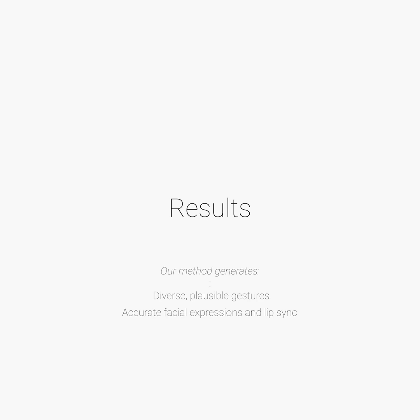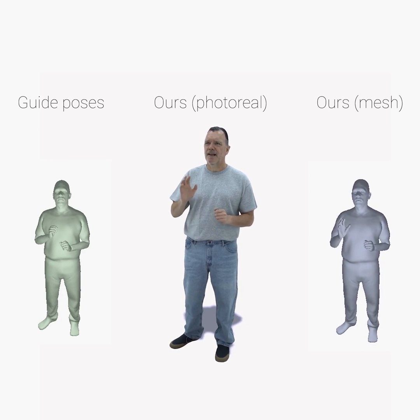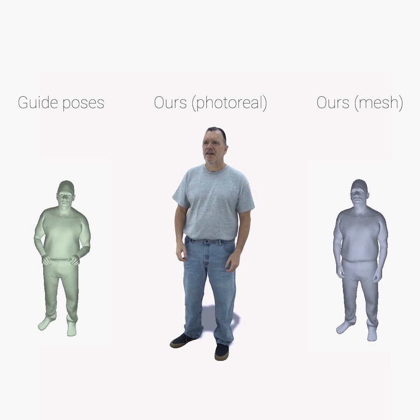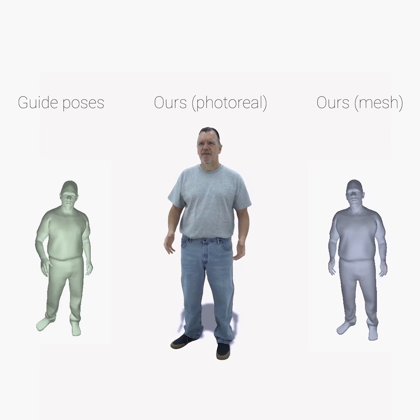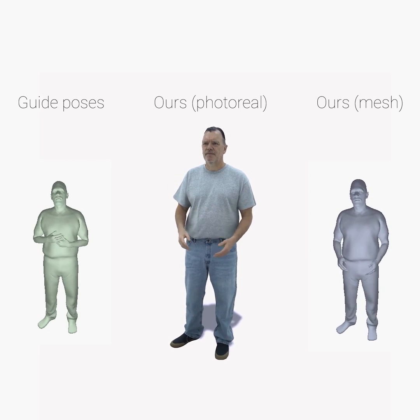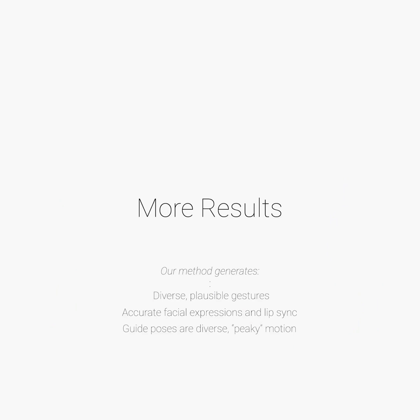Our method generates diverse and plausible gestures. For the face, our network produces accurate facial expressions and lip syncs. For the body, the guide poses encompass diverse and peaky motions such as pointing. Maybe making a nice dinner reservation and taking her to dinner and telling her. Well, that'd be nice. I think she'll be very supportive — she's told me I should be out on my own for years and years. You have an avatar. The diffusion network successfully infills these guide poses with realistic, high-frequency details such as a wrist flick.